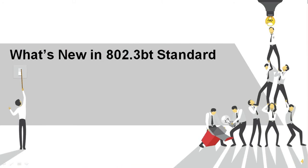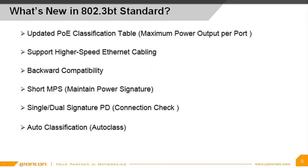Let's move on to the key enhancements of the IEEE 802.3BT standard. The new standard has defined several key enhancements that bring us the benefits of increased operational efficiency and power savings. These key enhancements include an updated PoE classification table, support of higher-speed Ethernet cabling, backward compatibility, short MPS, single or dual signature PD, and auto classification. We will talk about these key enhancements in more detail in the following slides.